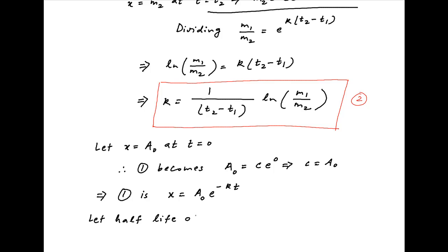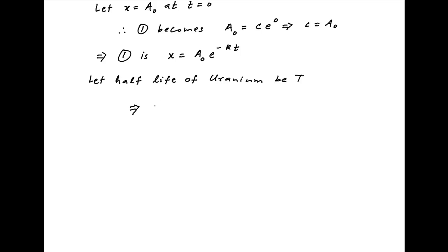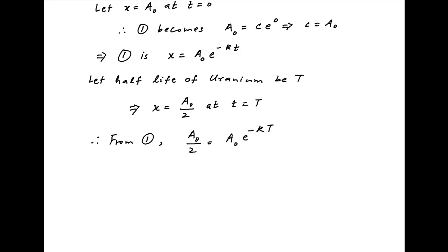Now let the half-life of uranium be capital T. This means that after time capital T, the amount of uranium left is a0/2. Therefore x is equal to a0/2 after time capital T. Using this in equation 1, we get a0/2 is equal to a0 times e raised to the power minus kT. a0 cancels, therefore 2 is equal to e raised to the power k times capital T.